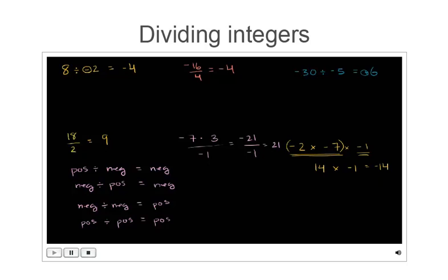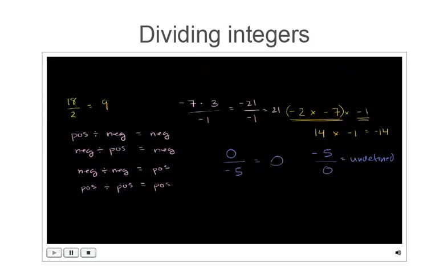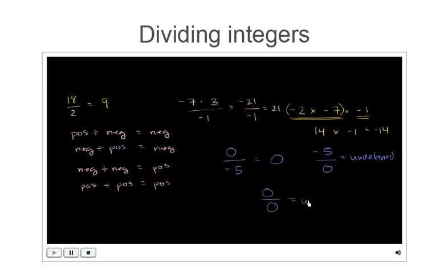A couple of trick problems: 0 divided by negative 5 — zero divided by anything non-zero is simply 0. But negative 5 divided by 0 is undefined, since we haven't defined division by zero. Similarly, 0 divided by 0 is also undefined.